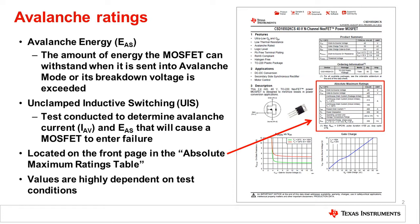It wasn't long before this parameter was added to the datasheet before marketing engineers like myself started figuring out that the higher the rating, the more competitive the part looked, and started figuring out how to play games with the parameter by varying some of the values that the parameter was tested at. I'll talk about that more later. But in general, the higher the avalanche energy, the more rugged and robust the device is — so larger is better.